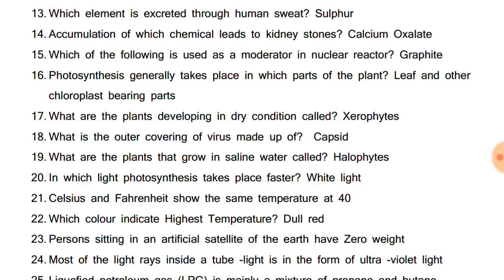Photosynthesis generally takes place in which parts of the plant? Leaf and other chloroplast bearing parts. What are the plants developing in dry condition called? They are known as xerophytes, for example, cactus, agave and so on. What is the outer covering of virus made up of? It is made up of protein known as capsid.